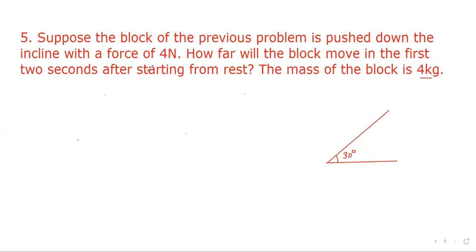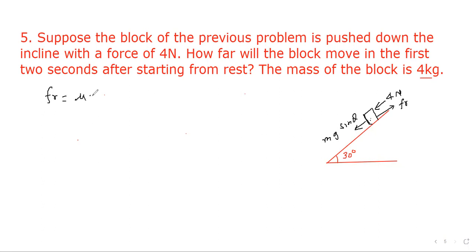The next question says: suppose the block from the previous problem is pushed down the incline with a force of 4 newtons. The block is placed on the incline and a 4-newton force is applied downward along it. The force mg sinθ acts downward due to weight, friction acts up the incline, so the total downward force is mg sinθ + 4.